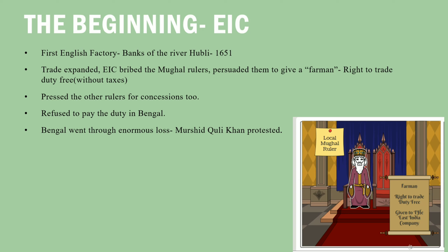The first English factory was set up on the banks of the river Hooghly in 1651. They set up a base here and the traders, also known as factors, operated from here. As trade expanded, the company bribed and persuaded Mughal officials to issue a farman — a royal order — which granted the East India Company the right to trade duty-free, that is, without paying taxes.